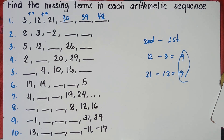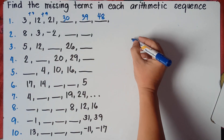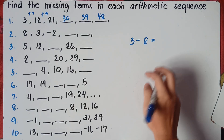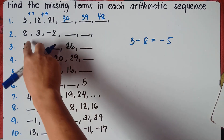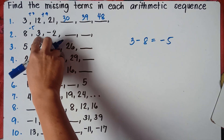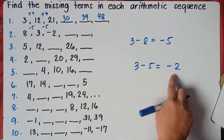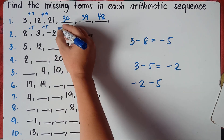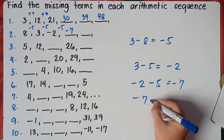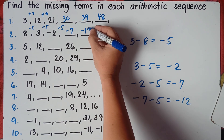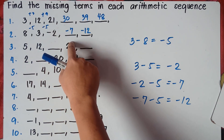Number 2: subtract the second term minus the first term — 3 minus 8 equals negative 5. So the common difference is negative 5. Starting from 8: 8 minus 5 is 3, 3 minus 5 is negative 2, negative 2 minus 5 is negative 7, and negative 7 minus 5 is negative 12. So the missing numbers are negative 7 and negative 12.